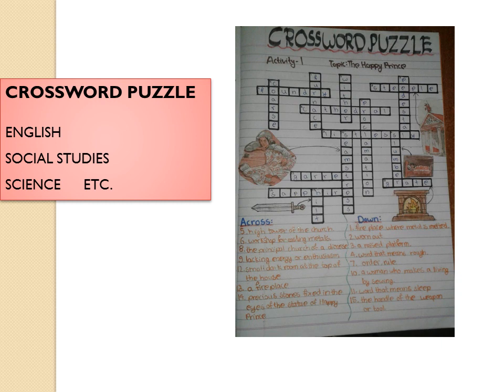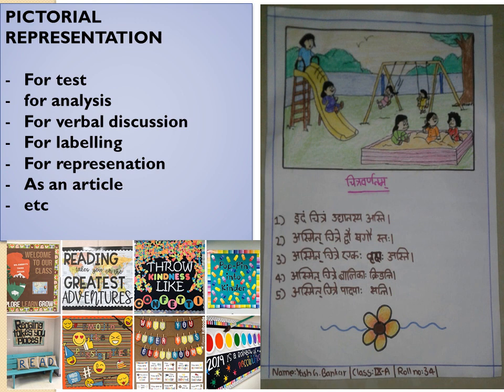We can also make the puzzle in a different way so that students are involved and enjoying the activity. This is a pictorial representation where we have asked the students to draw a picture. We can also do it the other way: give them a paragraph and ask them to draw, or if we have a picture, we can ask them to write a paragraph based on the lesson taught.